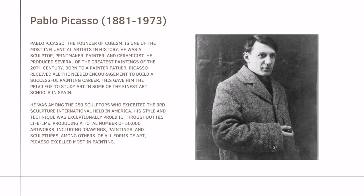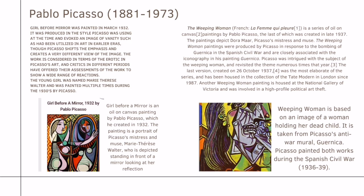His output included drawings, paintings, and sculptures among other forms of art, but Picasso excelled most in painting. The first famous work is Girl Before a Mirror, painted in March 1932 in the style Picasso was using at the time. It evoked an image of vanity as utilized in art in earlier eras, though Picasso shifts the emphasis and creates a very different view. The work is considered in terms of the erotic in Picasso's art, and critics have offered a wide range of reactions. The young girl depicted was Marie-Thérèse Walter, who was painted multiple times during the 1930s. Girl Before a Mirror is an oil on canvas painting by Pablo Picasso.